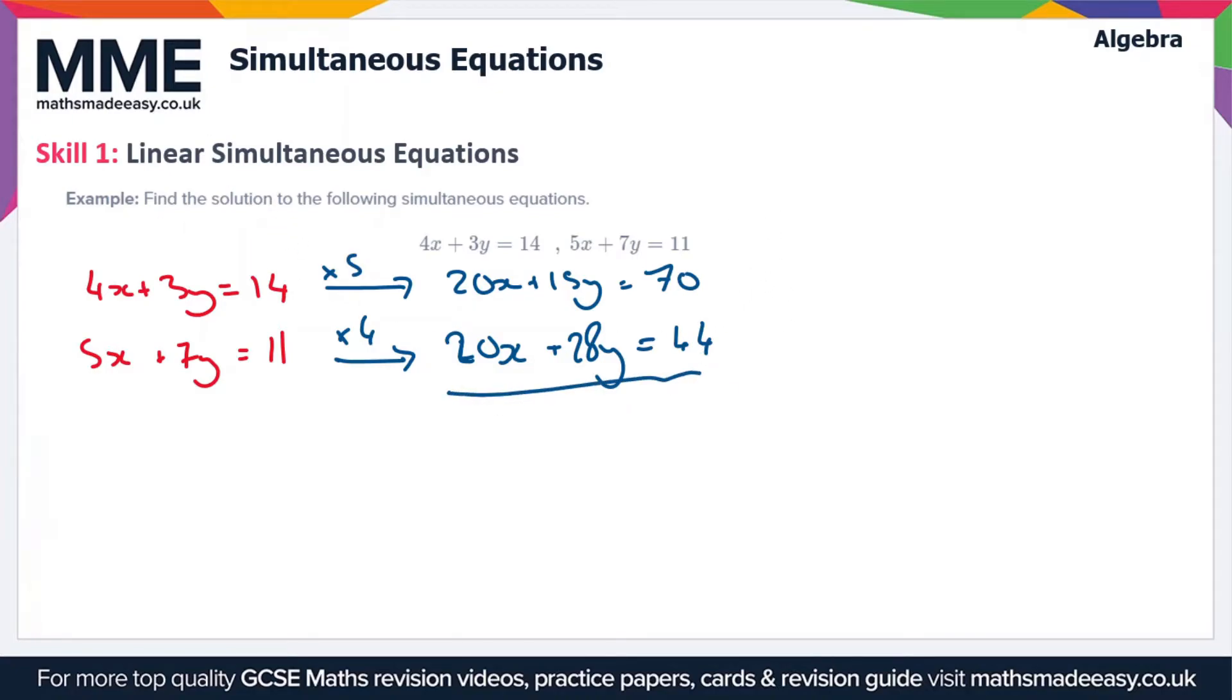So let's draw a line at this. What we're going to do, let's call these equation 1 and equation 2, is we're going to subtract equation 2 from equation 1. So this is going to leave us with nothing in the x column and then 15y minus 28y, that's going to give us minus 13y.